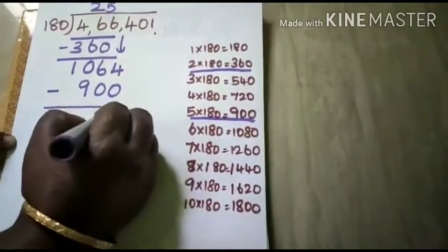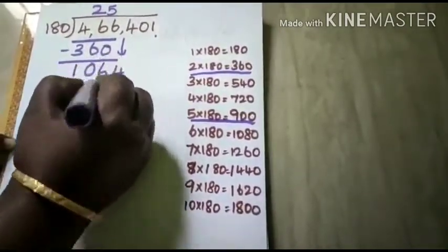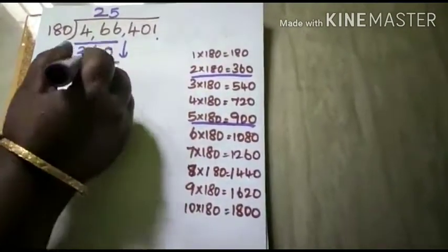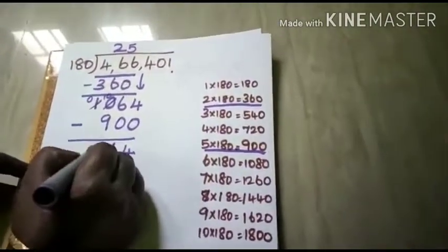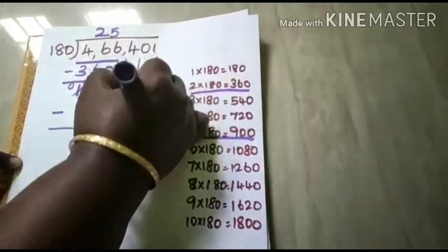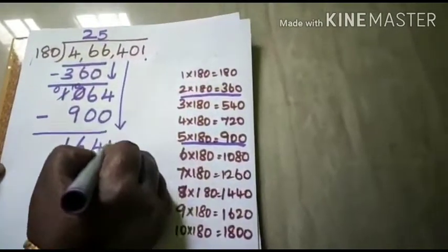Subtract. 4 minus 0 is 4, 6 minus 0 is 6. And here you have to borrow. 10 minus 9 is 1. Next bring down 0.